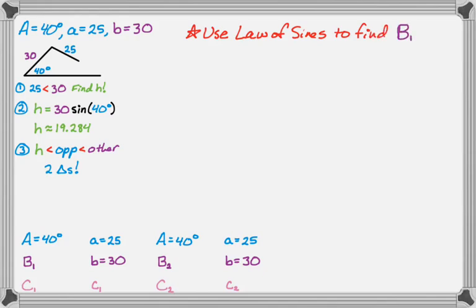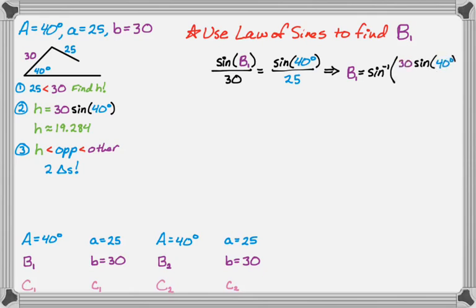Now we're going to use the law of sines to find B sub 1, angle B. It's actually the only thing you could possibly find at this point. So we set it up. It's going to be the sine of B sub 1 over 30 is the sine of 40 degrees over 25. That's the only thing we could possibly set up. That means B sub 1 is the inverse sine of 30 sine of 40 over 25.